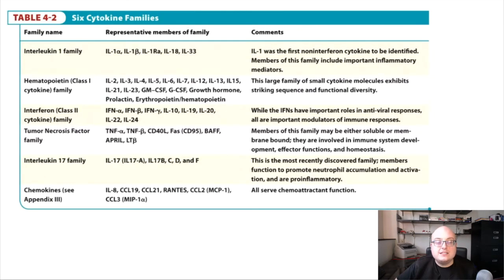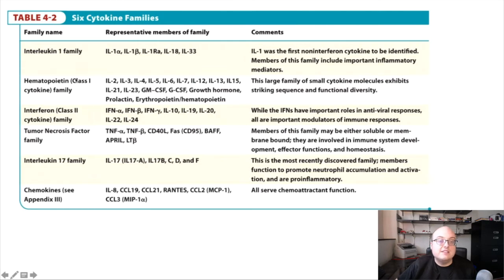In the last lecture we introduced ourselves to a table which listed six major families of cytokines. We're going to focus on class 1 and class 2 cytokines in this lecture. Remember that class 1 includes a huge list of cytokines whose primary similarities to each other are the fact that they share common receptor subunits, and we're going to talk a little bit more about that in this lecture.